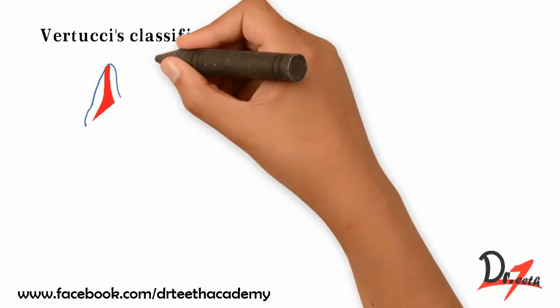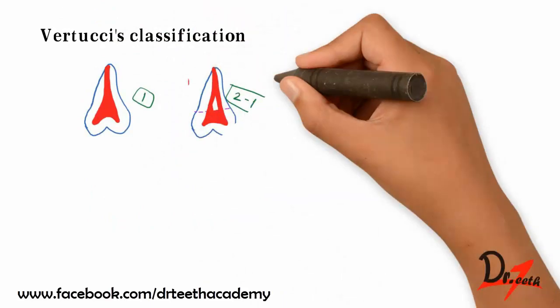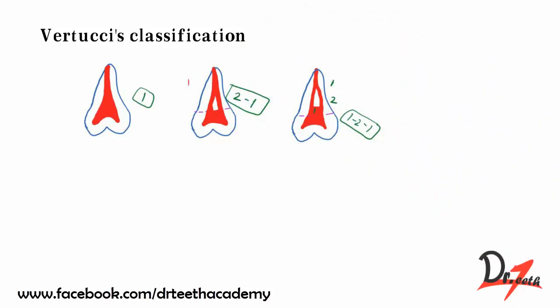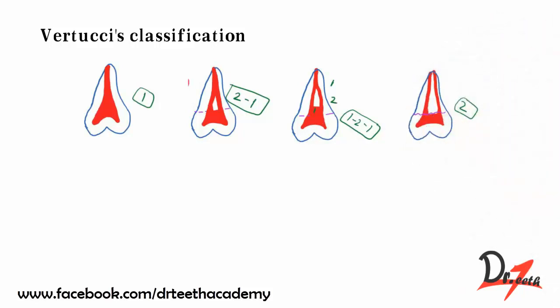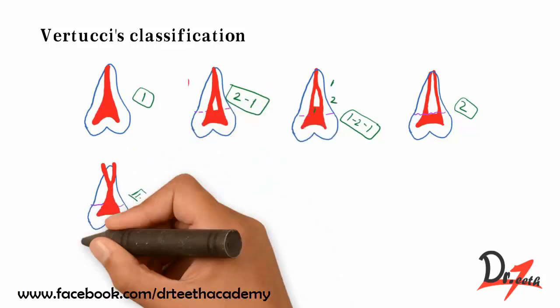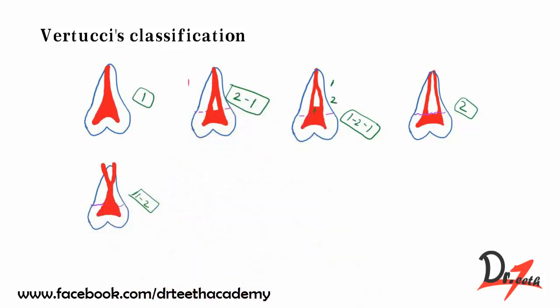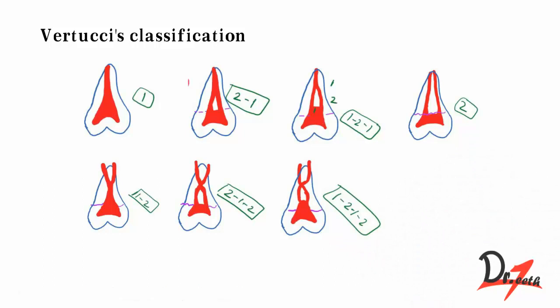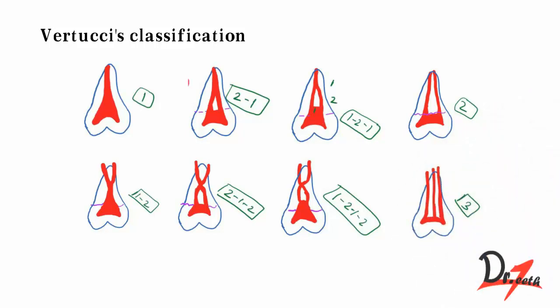The extended classification continues: Type 5 is one canal bifurcating into two. Type 6 is two canals joining to one, then bifurcating again to two. Type 7 is one canal bifurcating to two, then joining to one, then bifurcating again. Type 8 involves three separate canals. These complex configurations pose real challenges in clinical endodontics.